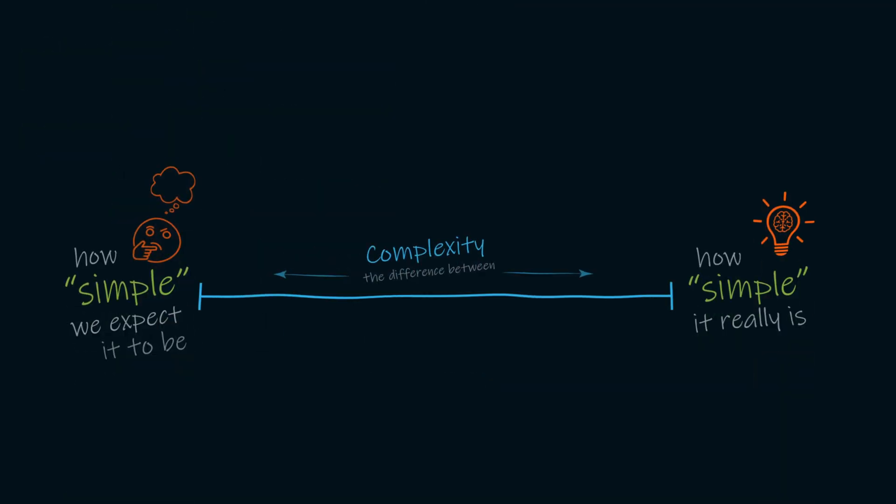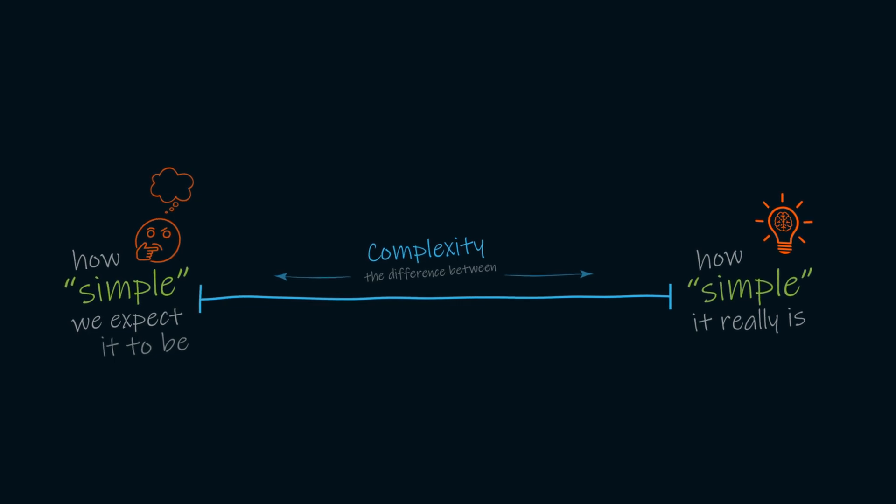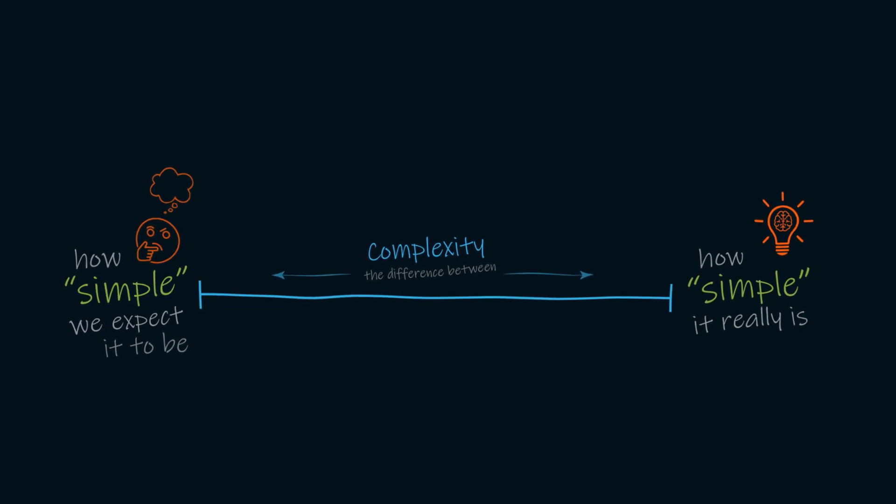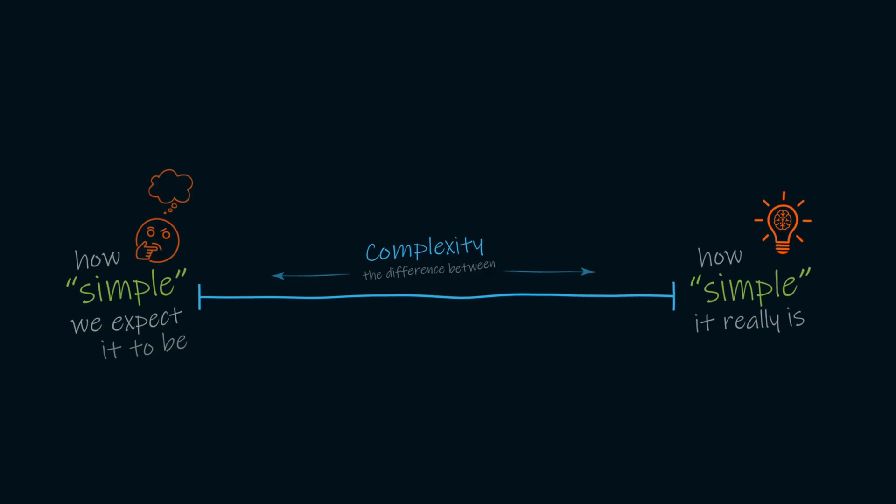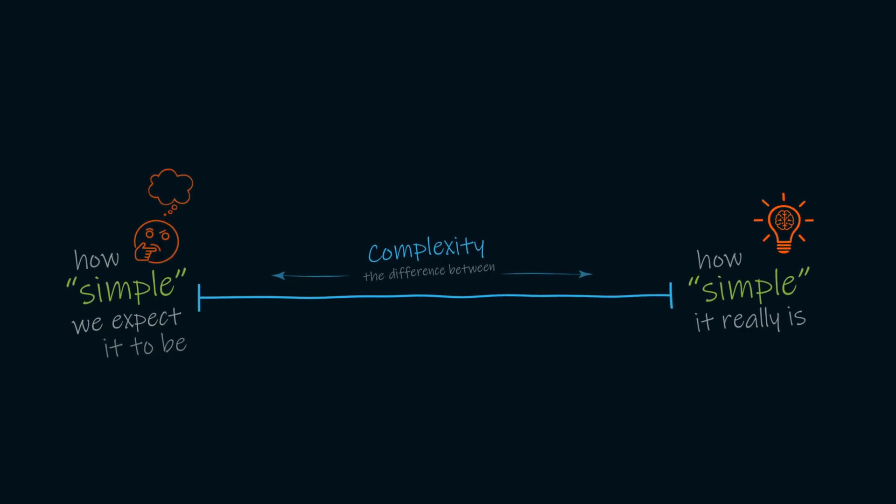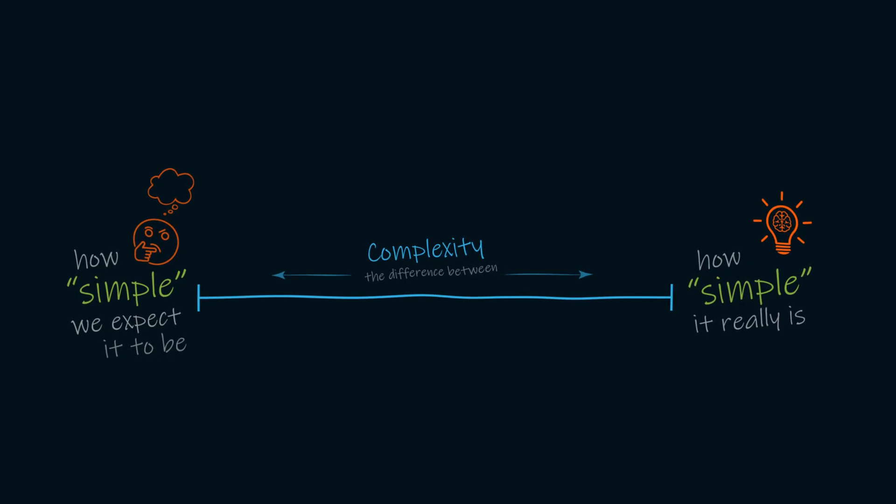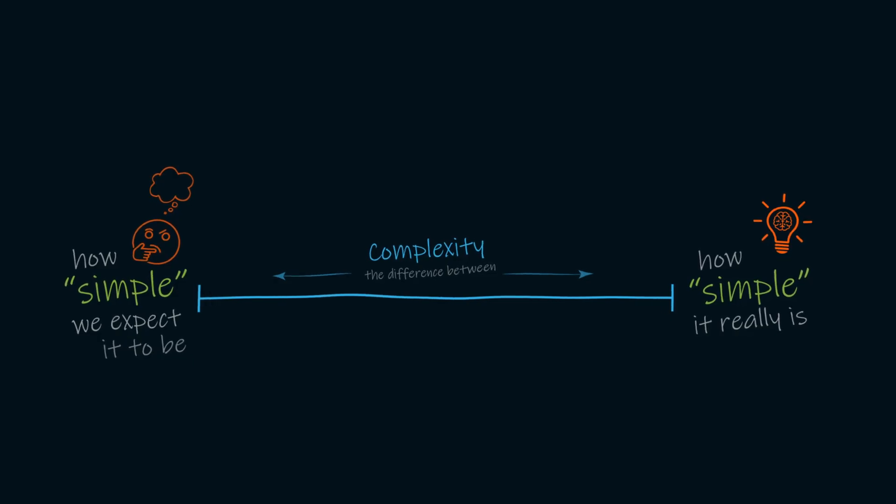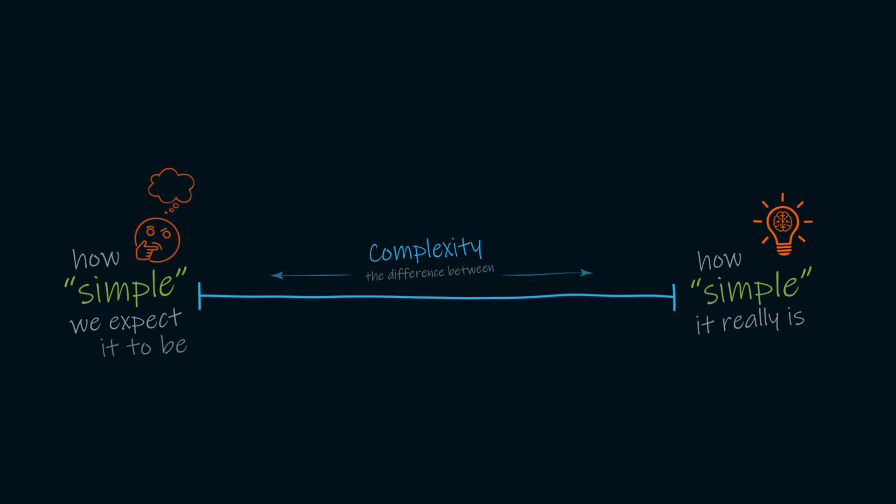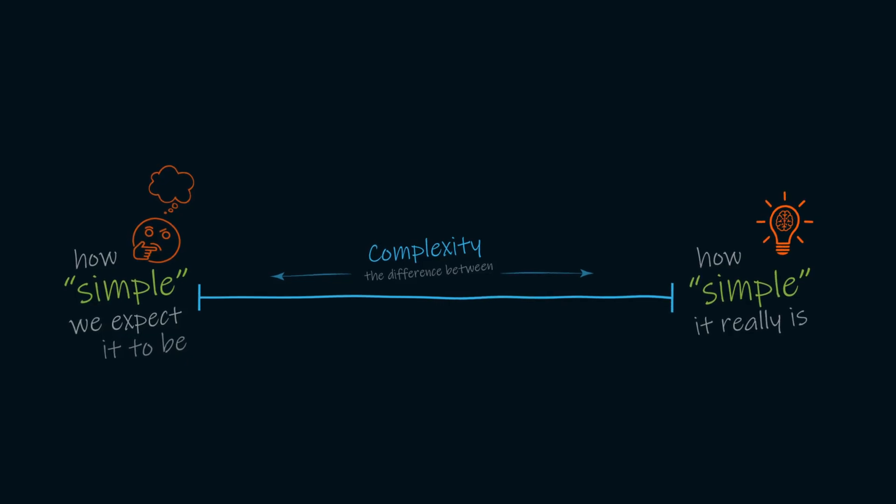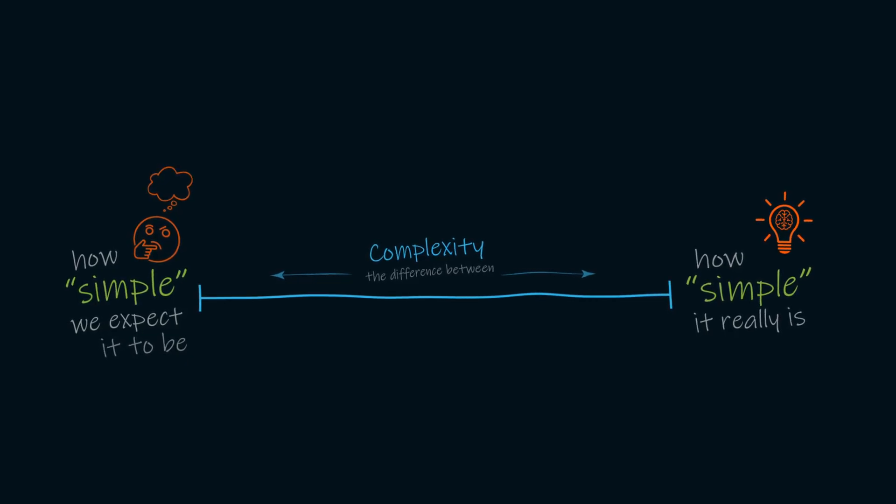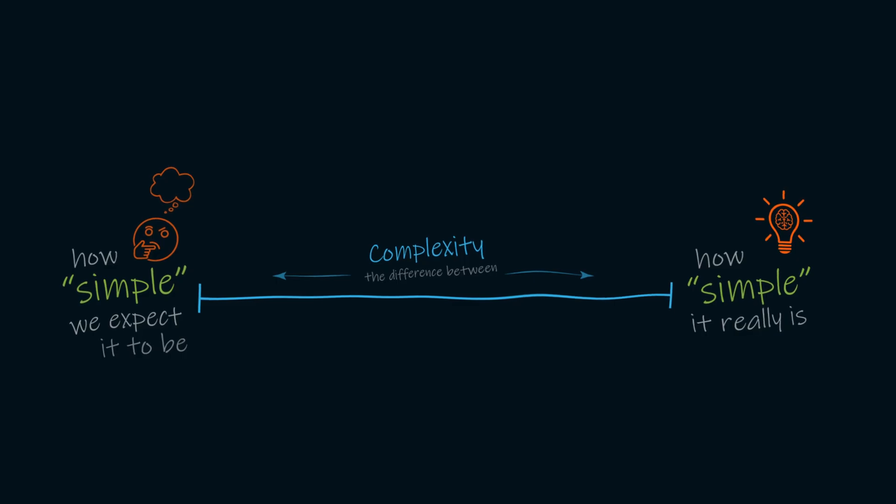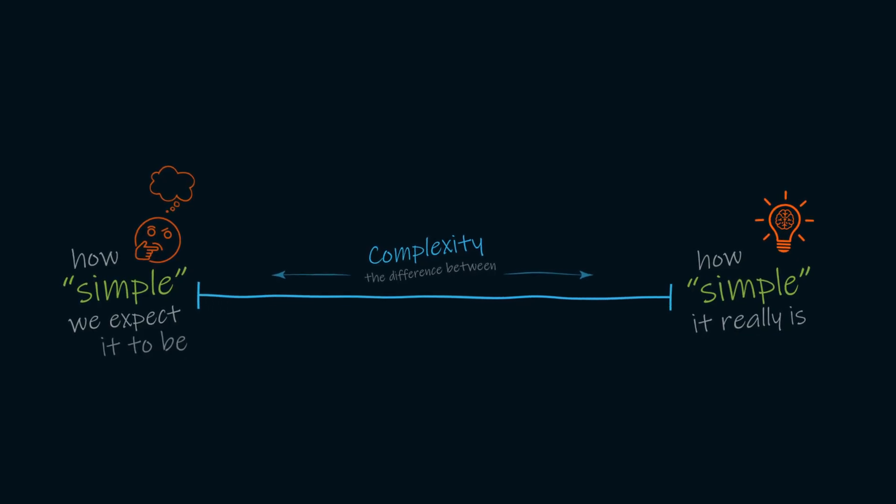Now that we've defined simple, let's take a look at complex. Now, complex might be thought of as the opposite of simplicity, but it can be better defined as the discrepancy or the difference between how simple you expect something to be and how simple it ends up being when you start working with it. This might seem like a subtle difference now, but by the end of the video, I promise it will make sense.